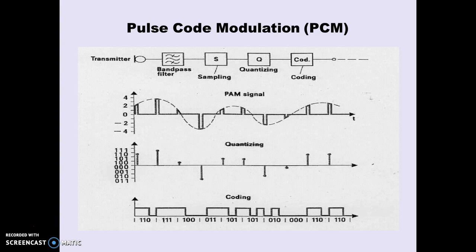Here is a figure illustrating the quantization process within the entire PCM process. The dotted line represents the analog signal we want to digitize. First we take samples — these are the pulse train — taken at equal intervals at the Nyquist rate. Each sample is then quantized to a discrete level, and each level is assigned a particular code, here a 3-bit code such as 111, 110, etc. Each code generates digital pulses that form the digital signal.